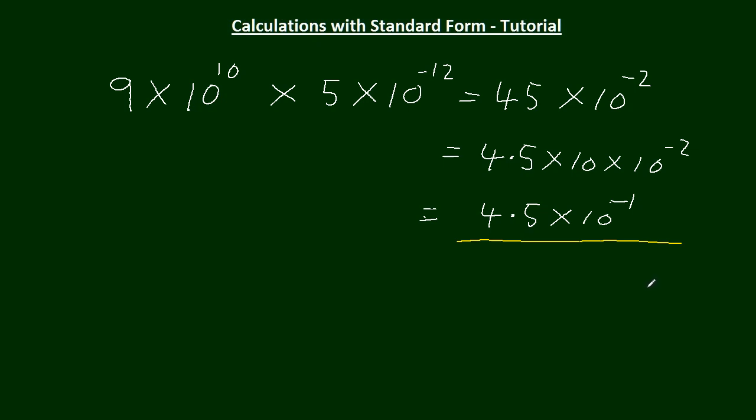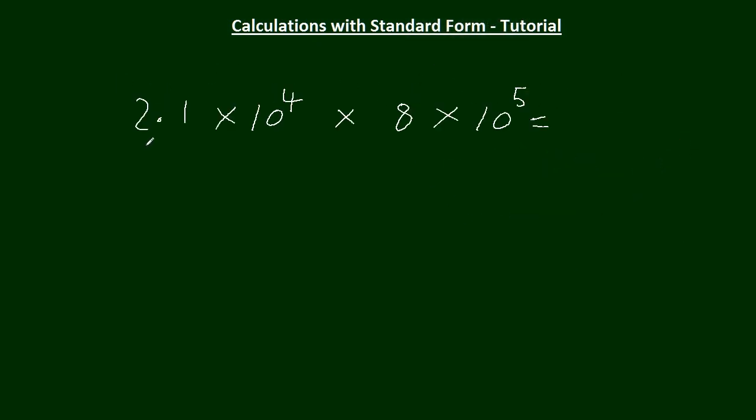I think I'll do one more multiplication. We've got this one now: 2.1 times 10 to the 4, times 8, times 10 to the 5. So let's do the indices first. That's 4 plus 5, 10 to the 9. 2.1 times 8. 8 times 2 is 16, 8 times 1 is 8, 16.8. Not standard form, it's got to be between 1 and 10, so it's got to be 1.68.